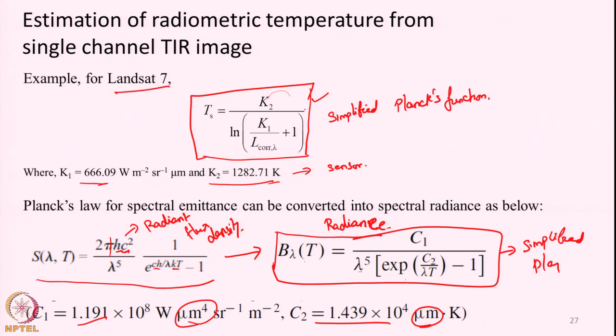Similarly, for other satellites such as Landsat 5 or Landsat 8 we have corresponding equations with their respective k values. Once we have the corrected radiance and substitute it, we get land surface temperature. This method is known as retrieval of LST using the radiative transfer equation — we estimate each atmospheric component separately. Even without access to sophisticated models, we can retrieve LST this way, since the atmospheric correction tool is available and emissivity can be calculated simply using NDVI.